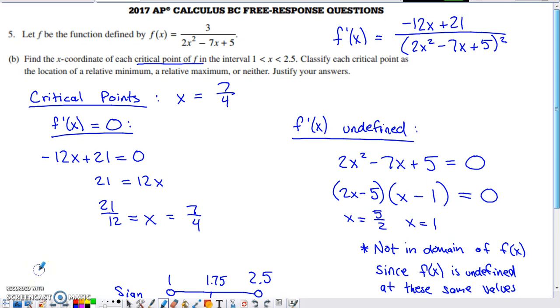If we move into part B, part B is another part that only involves AB content. And it's asking you to find critical points of this function on the interval 1 to 2.5, not including either endpoint.